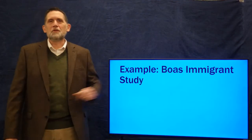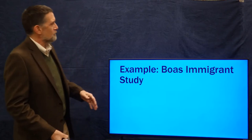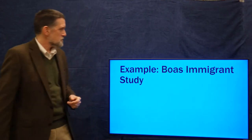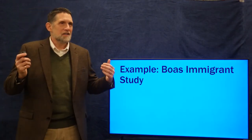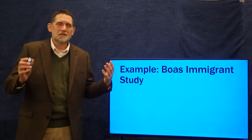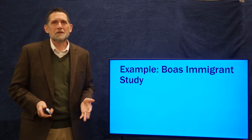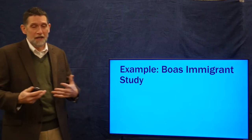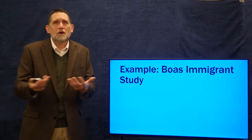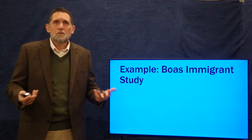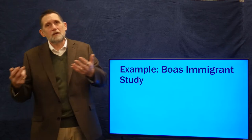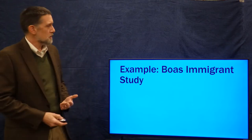We are back. We're going to start with an example now of ANOVA using Boas's immigrant study. I keep going back to this because it is really important in the history of anthropology, and the data are great for talking about this. It is the focus of where a lot of the statistics we use come out of — that question: does race explain variation in human behavior, or does culture?